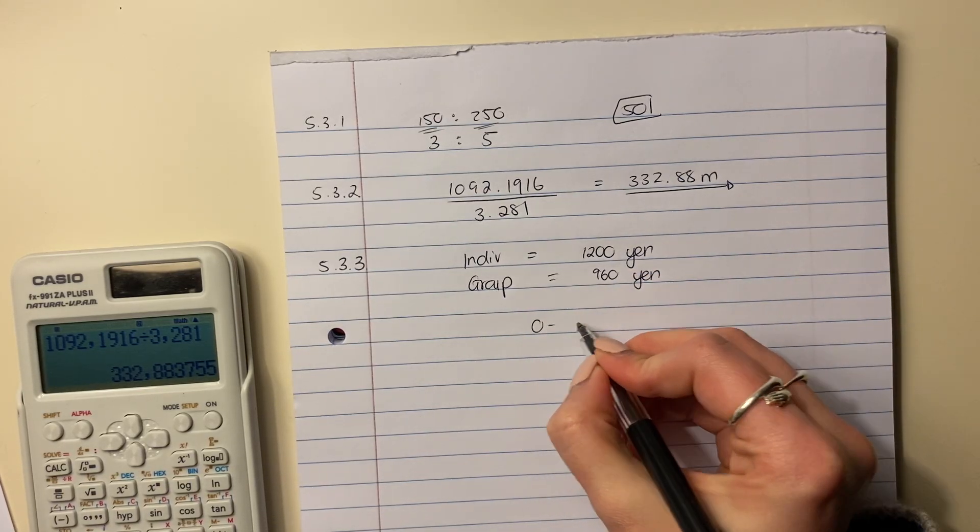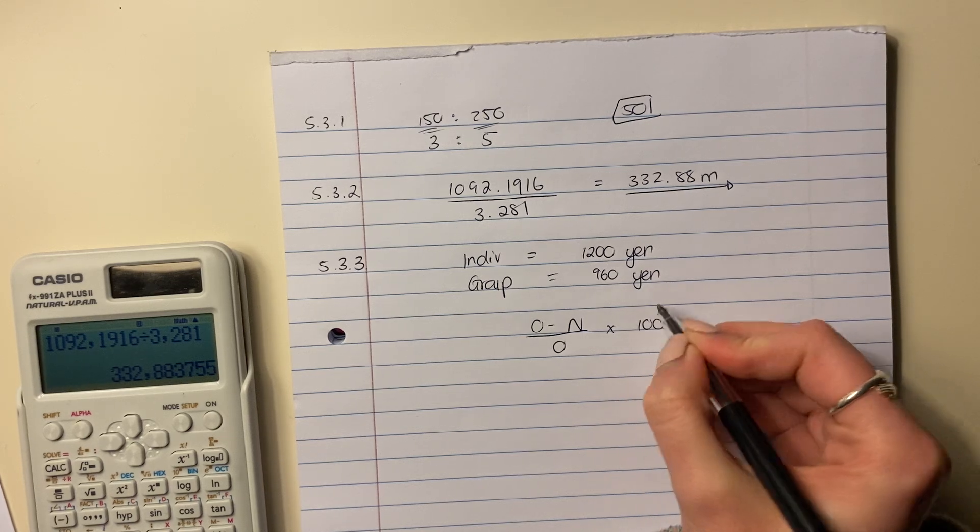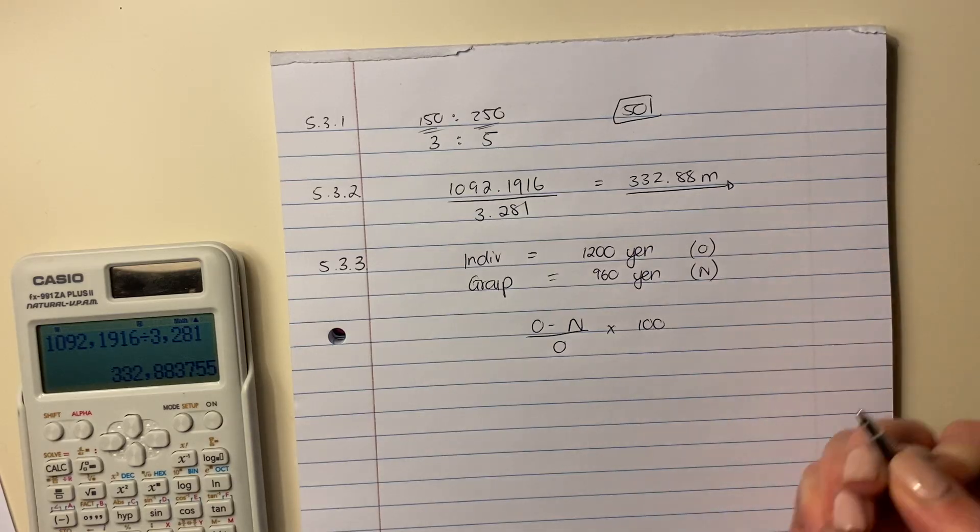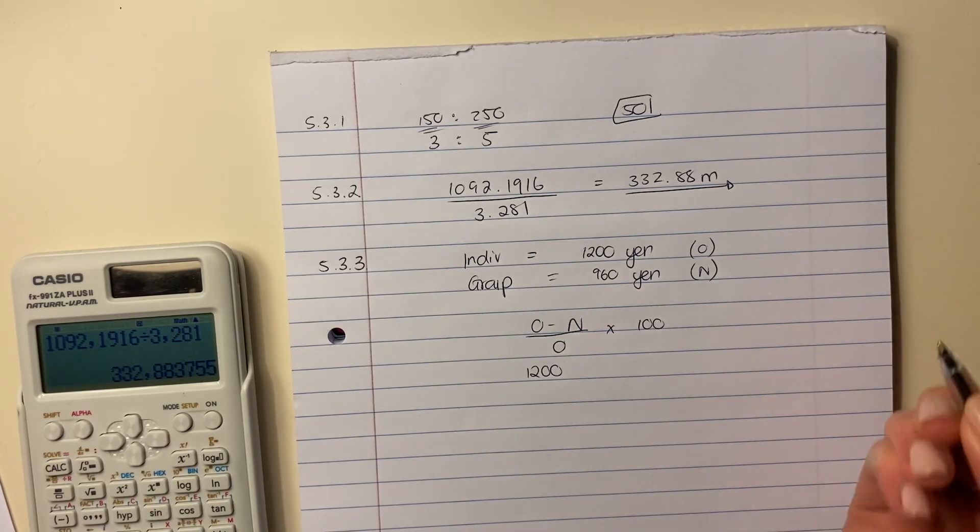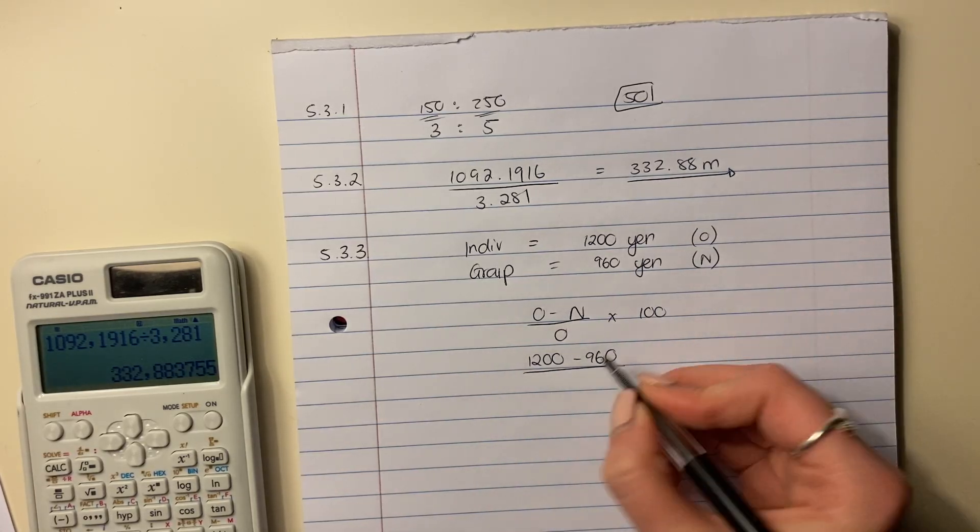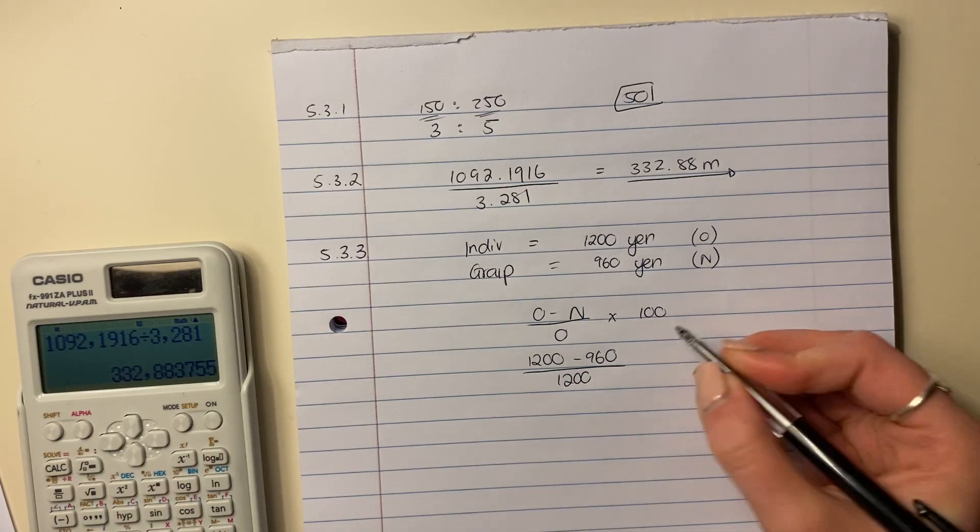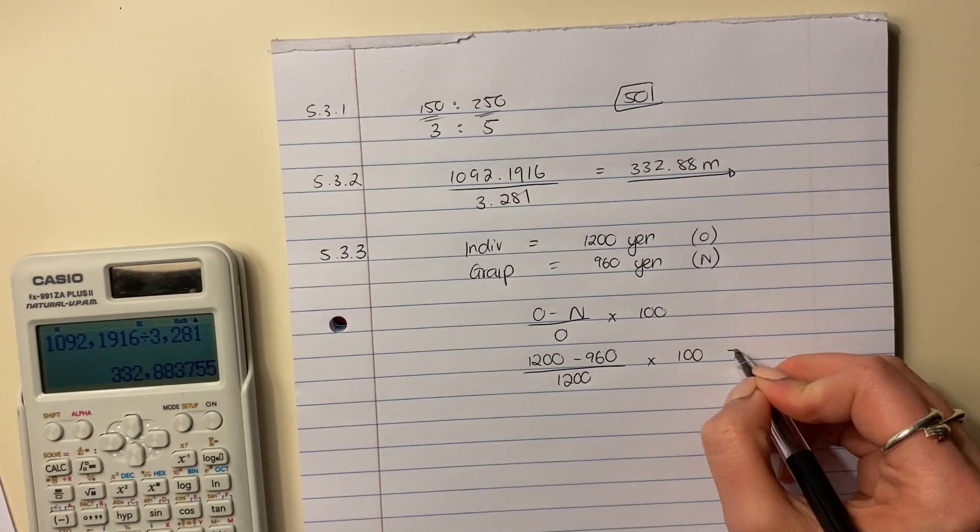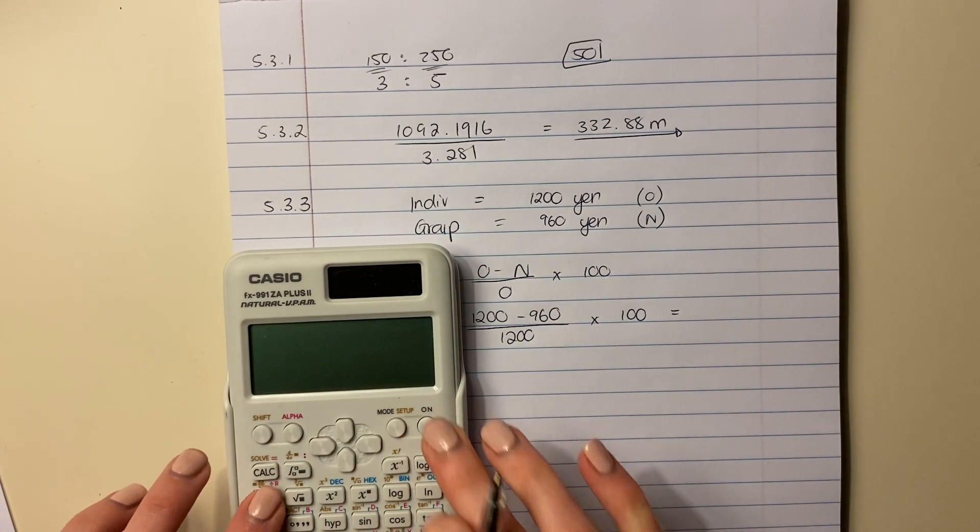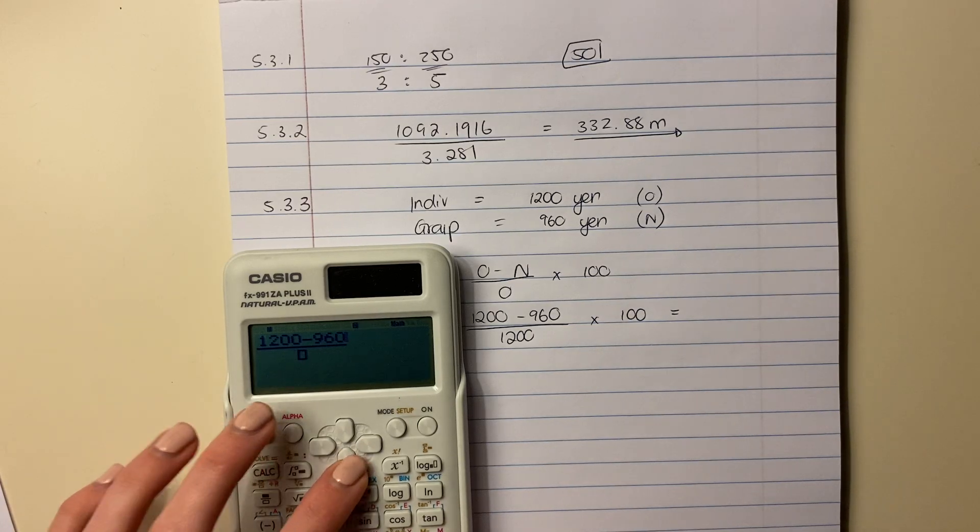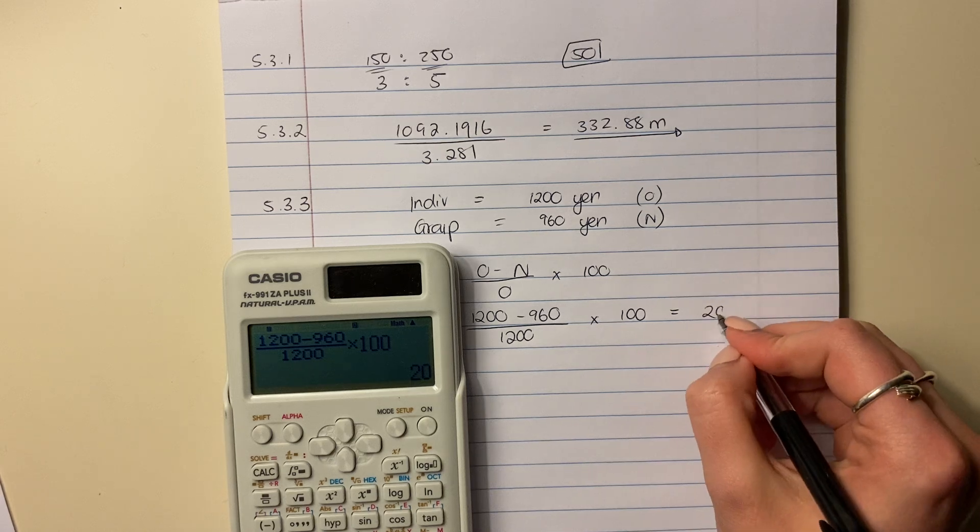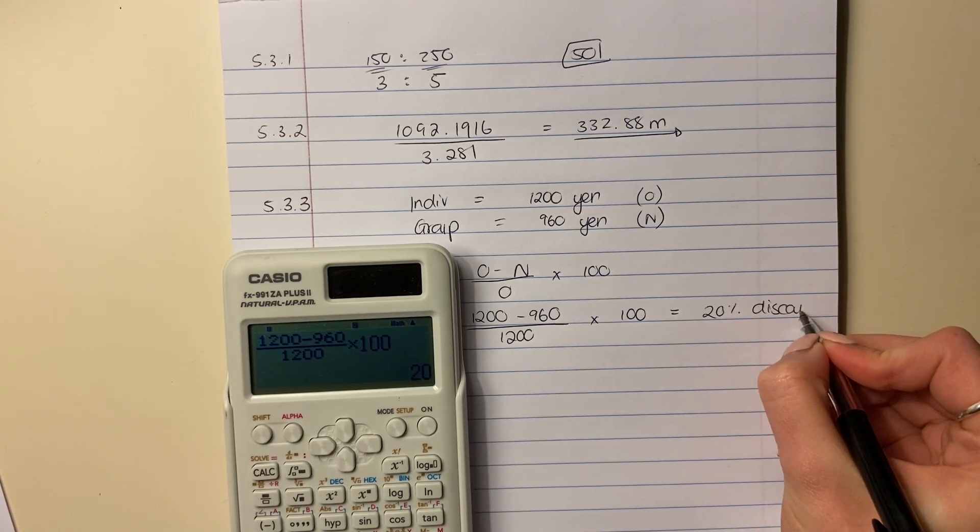Now do you remember this? Old versus new over old times 100. You have to know this. In this case, that's the old and that would be the new. So you would say, this is the price they would have paid as an individual. That's the price they would have paid as a group over the amount they would have paid as an individual times by 100. Why 100? Because we want a percentage. Put this in. Put it in carefully. I do things incorrectly sometimes, and you must try to avoid that. And it's actually a 20% discount.